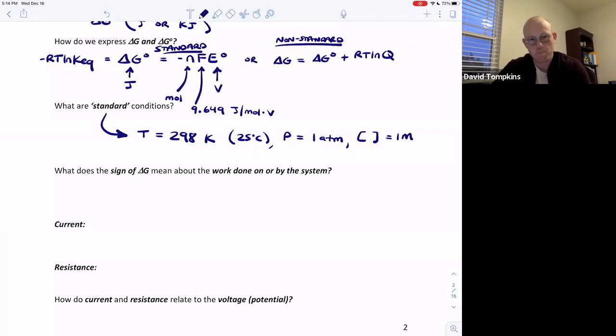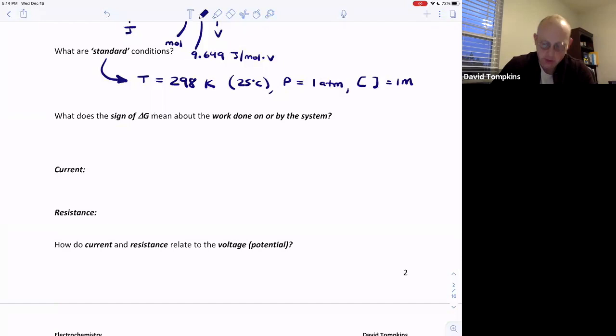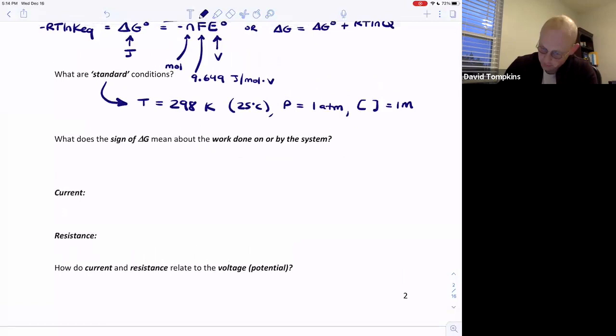Once we calculate delta G, whether it's delta G standard or delta G non-standard, the sign of delta G can tell us something about the work that can be done on or by the system. If delta G is positive, that means that the system absorbs energy or the system is increasing in free energy. Or in other words, the surroundings does work on the system.